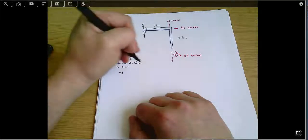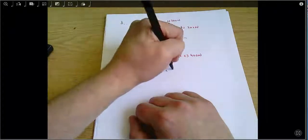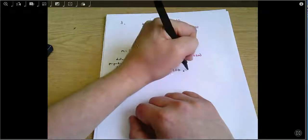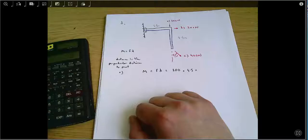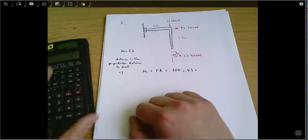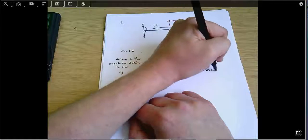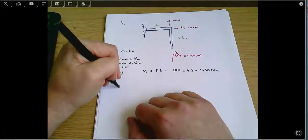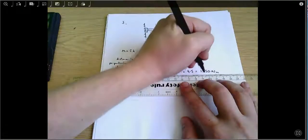And so for A, the moment equals the force times the perpendicular distance, which equals 300 times 4.5, which equals 1350 Newton metres. That's your answer for A. I guess you can make it clear then that that's your answer for A.